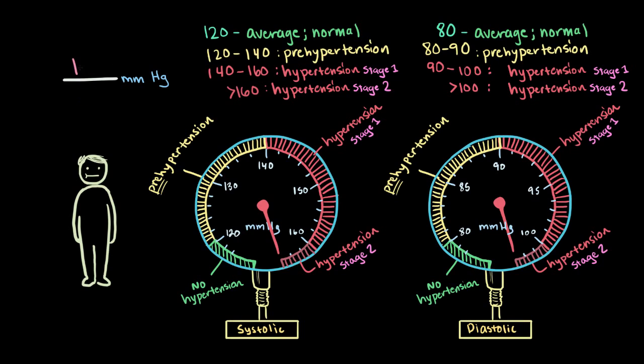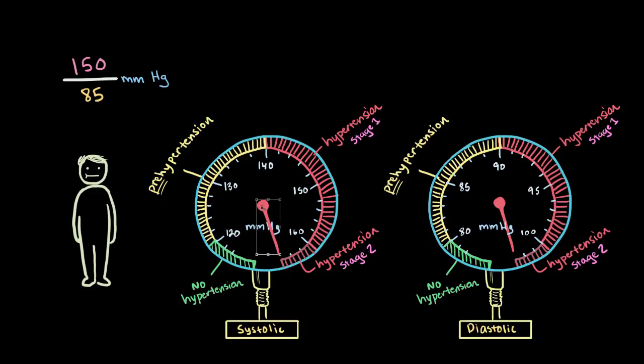Now, let's say my blood pressure is measured at 150 over 85. Okay, I can figure that out. Looks like over here it's 150, so that falls into stage 1 hypertension. But then, over on the diastolic side, 85 is in the pre-hypertension stage. Well, what gives? Is that possible? Yeah, absolutely.